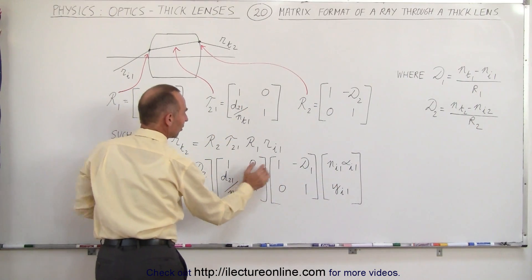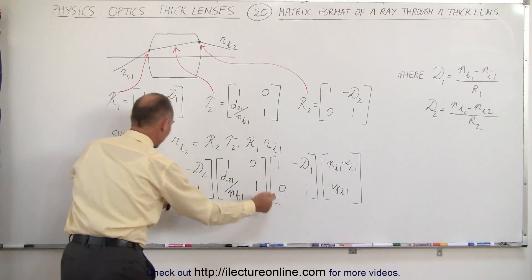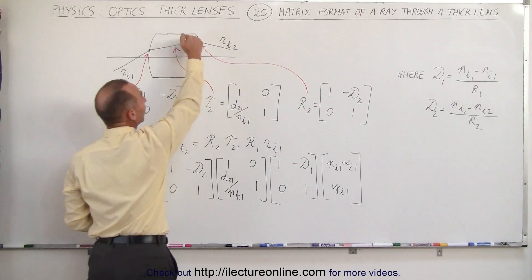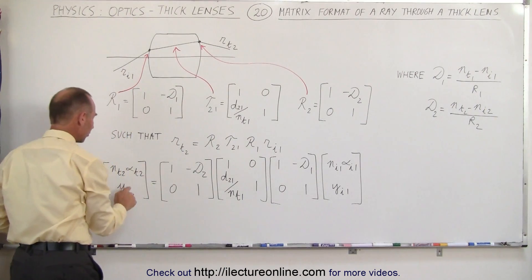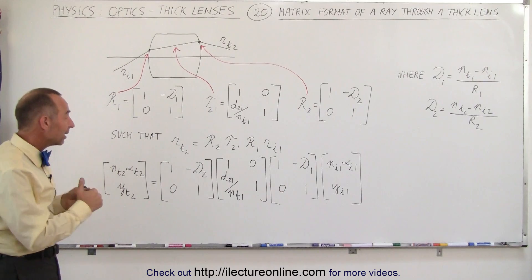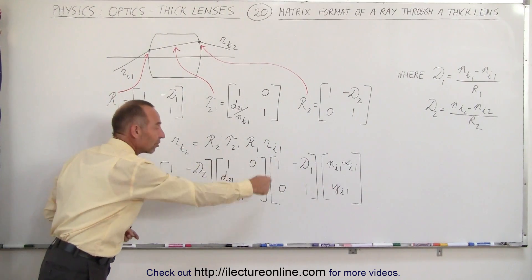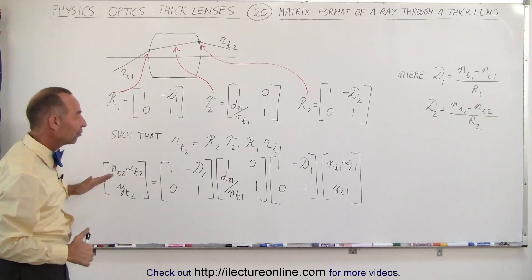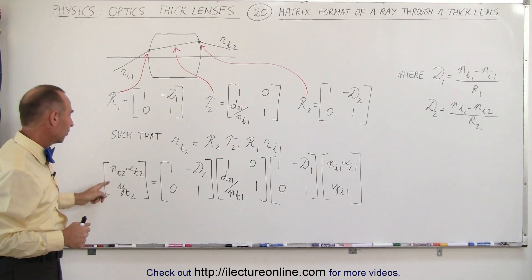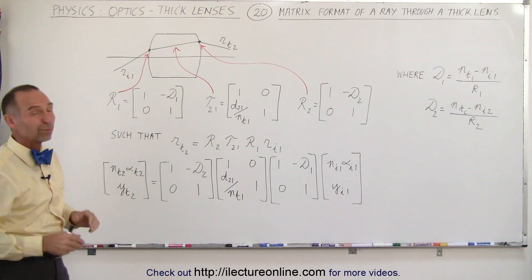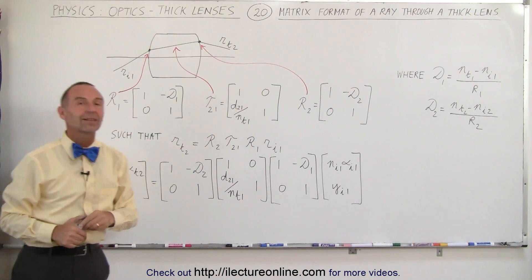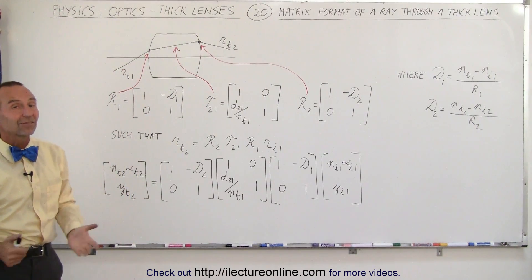We multiply the first matrix times the second, the result times the third, and that result times the fourth. This gives us the direction of the ray as it leaves the second boundary and the height of the ray above the optical axis. That's how we can very easily use this matrix method to calculate what happens to a ray as it travels through a thick lens, and we'll show you some examples of that.